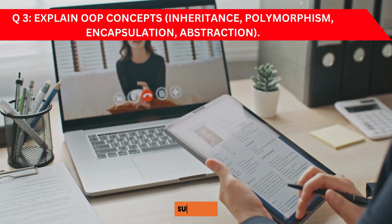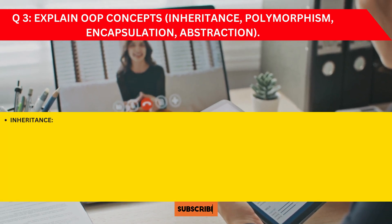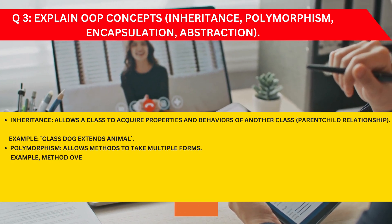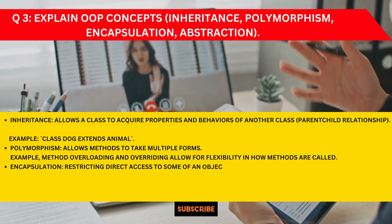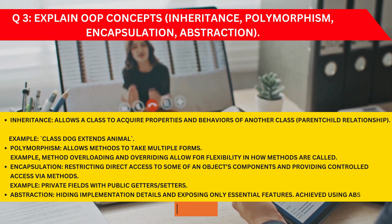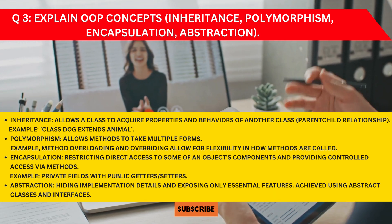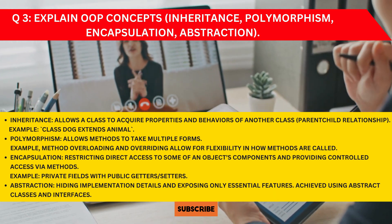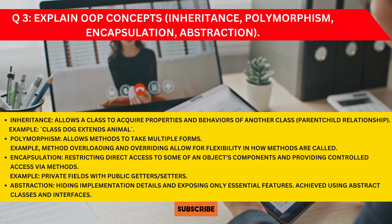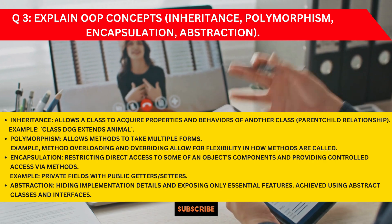Question 3: Explain OOP concepts. You can mention inheritance, polymorphism, encapsulation, and abstraction. For example, polymorphism allows a method to take multiple forms — method overloading and overriding allow flexibility in how methods are called. Go through examples in the same way for inheritance, encapsulation, polymorphism, and abstraction.